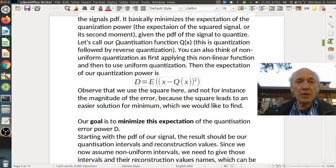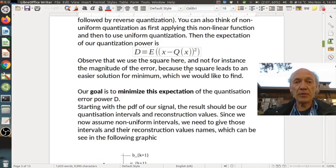So let's call our quantization function Q. This is quantization followed by reverse quantization. Basically, this is the signal that we have in our decoder. You can think also of non-uniform quantization as first applying this non-linear function, then to use a uniform quantization, and then do the reverse in the decoder. Then the expectation of our quantization power is simply the expectation of X minus Q. So Q is the signal in the decoder, the reconstructed signal, and there will be an error.